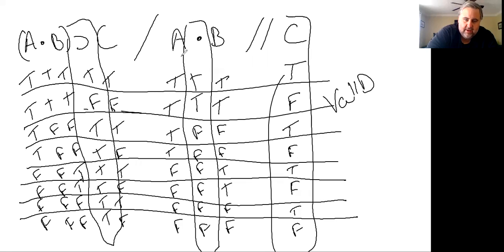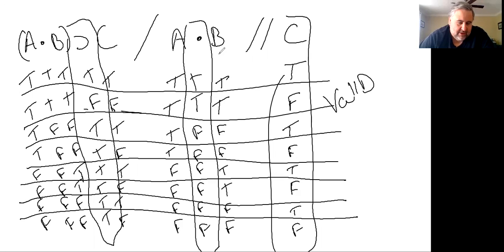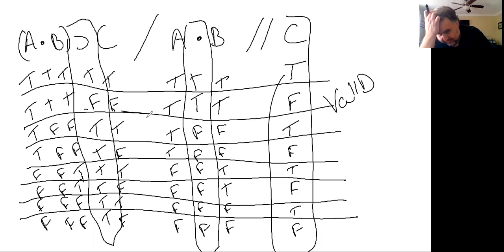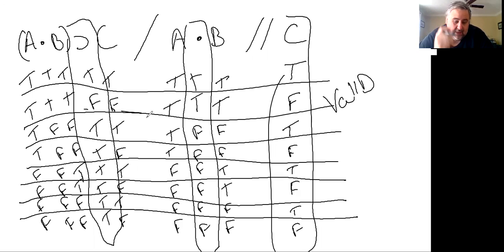I want to talk today about the indirect truth table. When you're doing truth tables on arguments, they usually have more than just one, two, or even sometimes three, four, five, six different capital letters — different propositions, different simple statements.